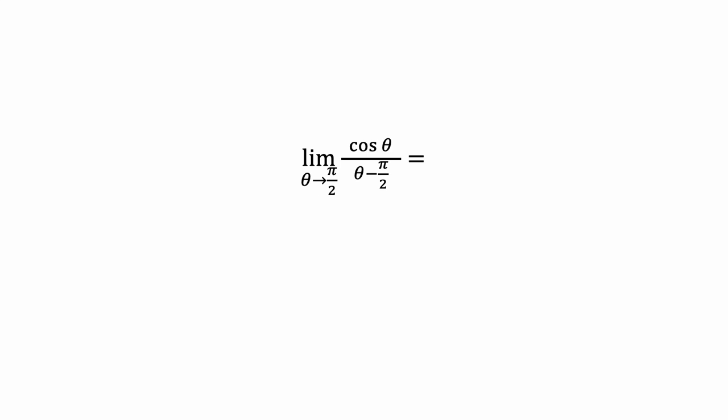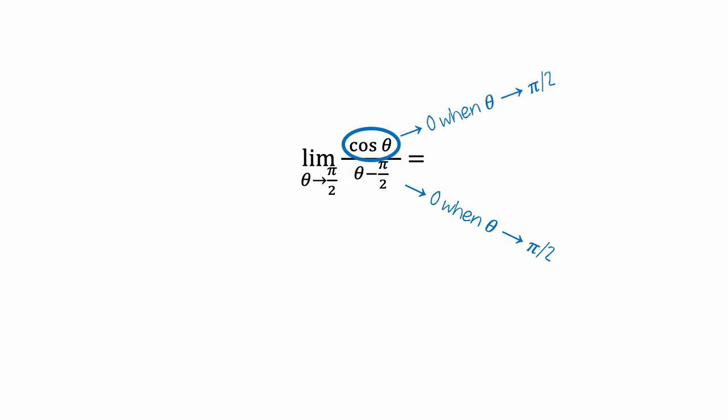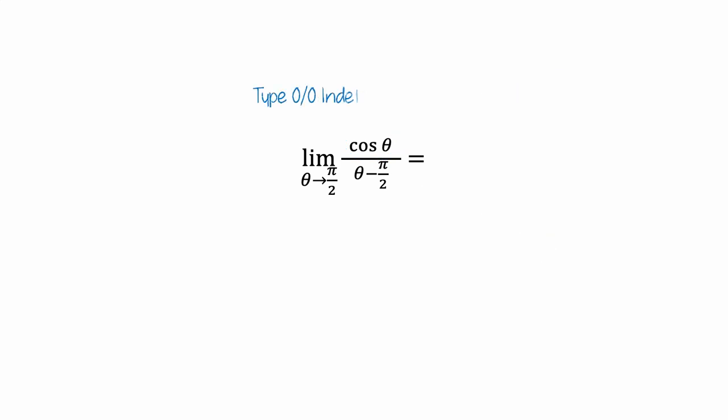Pause the video and try to evaluate this limit. Were you able to find a numerical value for this limit? You might have noticed a few things. First, the denominator approaches 0 when theta approaches pi over 2. Also, the numerator approaches 0 when theta approaches pi over 2. Taken together, this limit is an example of what is called a type 0 over 0 indeterminate form, because both the numerator and denominator approach 0.